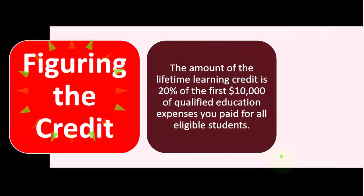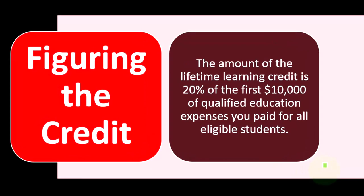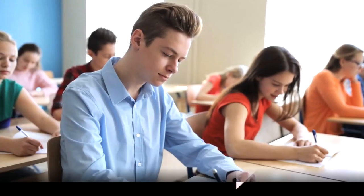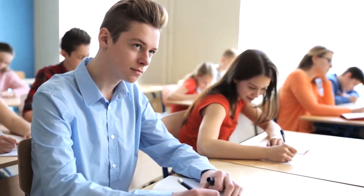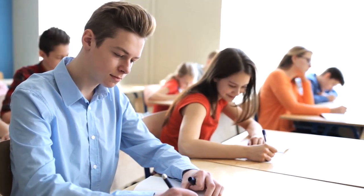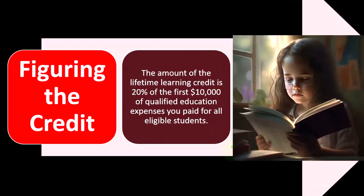Figuring the credit — we're looking at the lifetime learning education credit. There are two major education credits, the other being the American Opportunity Credit. Our thought process generally is: one, can I qualify for the American Opportunity Credit? If I cannot, then two, I default to the lifetime learning credit, which is our focus here. The qualifications for the American Opportunity Credit are more restrictive than those for the lifetime learning credit, so the general assumption here is that we couldn't qualify for the American Opportunity Credit.